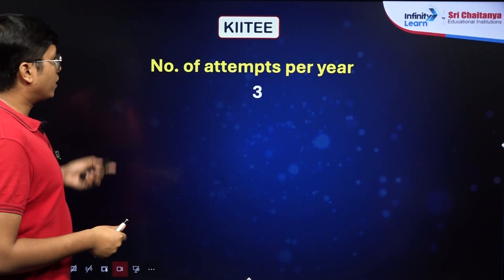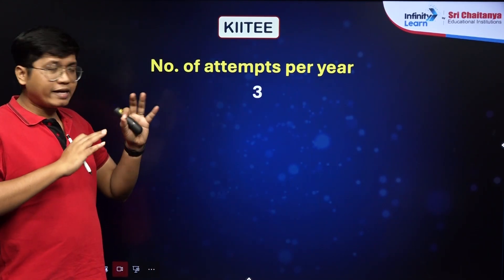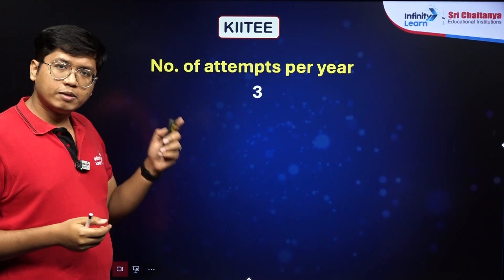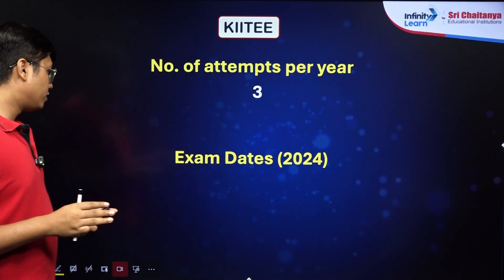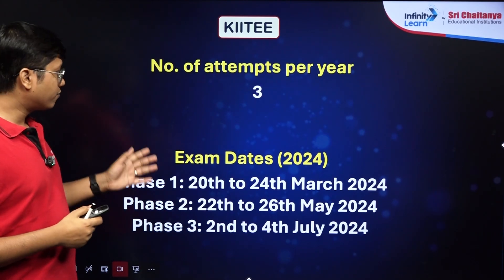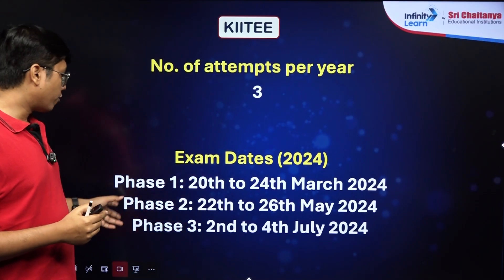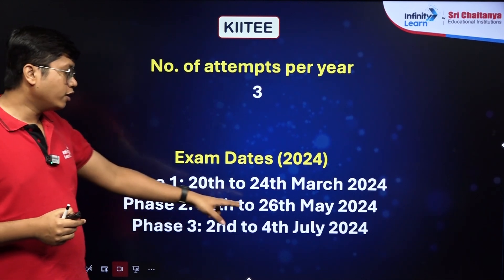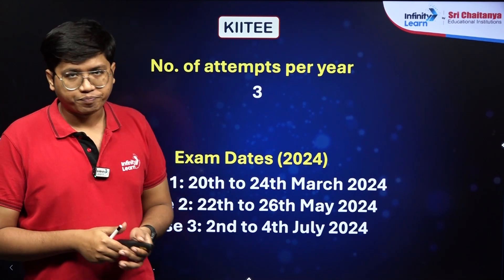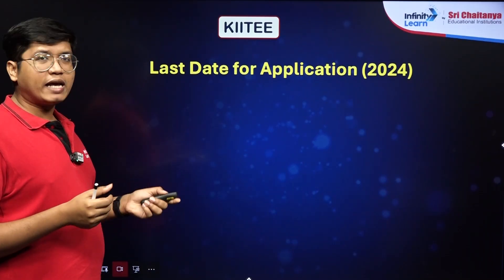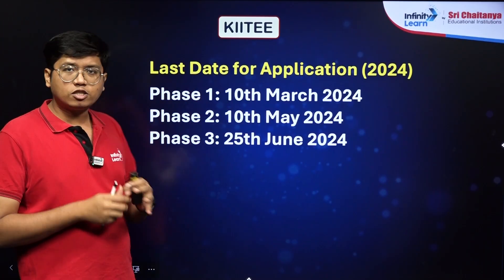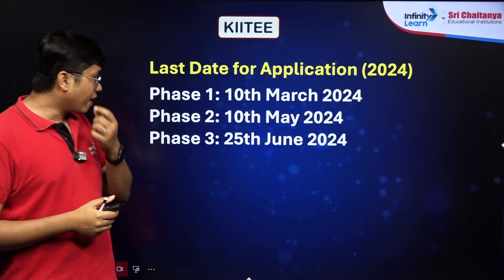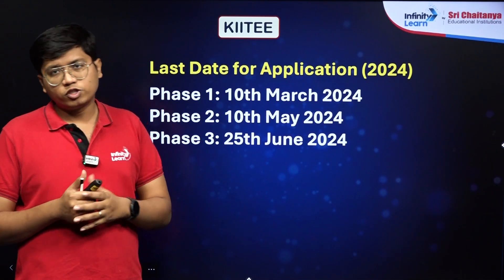You can give a total of three attempts per year. Just as JEE Mains happens over two phases — January and April — KIITEE happens in three phases. Phase one is from 20th to 24th March, phase two is from 22nd to 26th May, and phase three is from 2nd to 4th July. The last date for applications are: 10th March for phase one, 10th May for phase two, and 25th June 2024 for phase three.